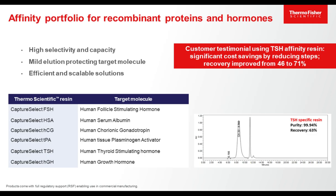Moving on from the antibody landscape, we also have the largest affinity portfolio for recombinant proteins and hormones. We've developed products for FSH, albumin — for albumin fusions for half-life extension — HCG, TPA, TSA, and human growth hormone. On the TSA resin, for example, customer data generated by Genexin in Korea demonstrates dramatically improved yield by cutting out steps — improving recovery from 46% to 71% by implementing this resin.